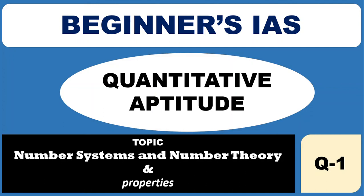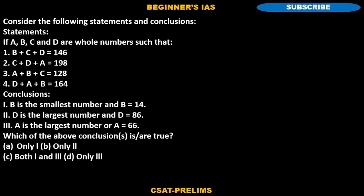Hello aspirants, welcome you all. Let us solve one quantitative aptitude question based on the topic called number system. Here is the question: consider the following statements and conclusions. The statements given here are if A, B, C, and D are whole numbers such that four equations have been provided. Some conclusions are given. You need to check the conclusions after solving the statements. Here we need to identify which of the above conclusions are true.